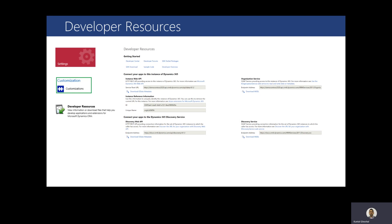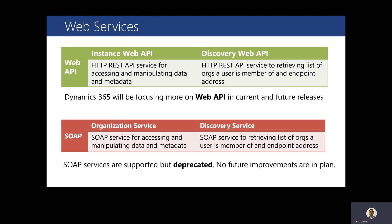The Customer Engagement Web API provides a development experience that can be used across a wide variety of programming languages, platforms, or devices. The Web API implements OData, or Open Data Protocol version 4.0, an OASIS standard for building and consuming RESTful APIs over rich data sources. The Web API should be your first choice for new development. Eventually, the Web API will replace the organization service and organization data service, but both existing web services will remain available to enable a gradual transition.